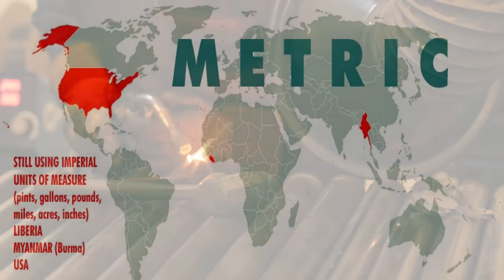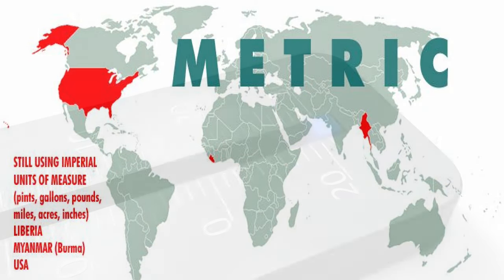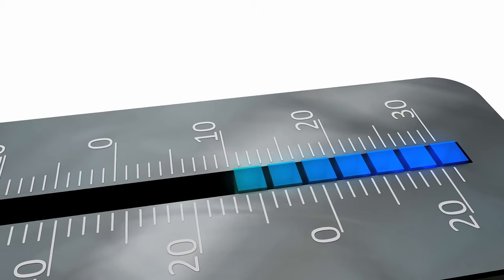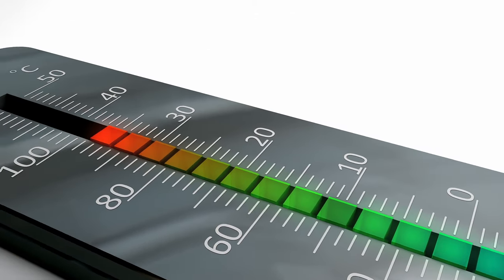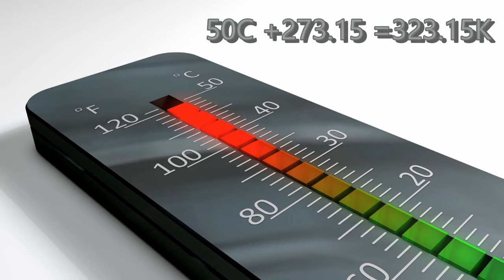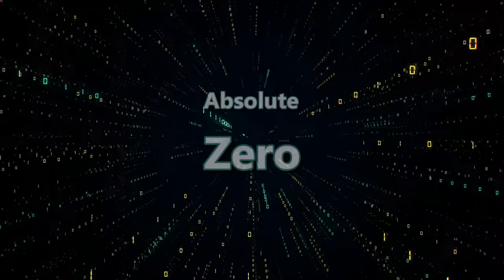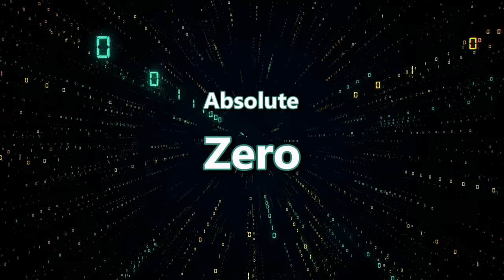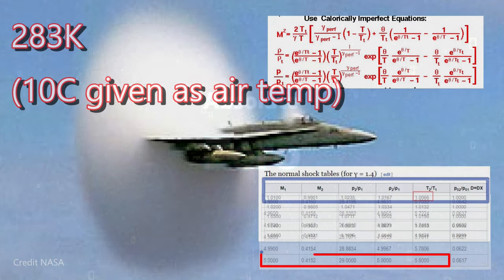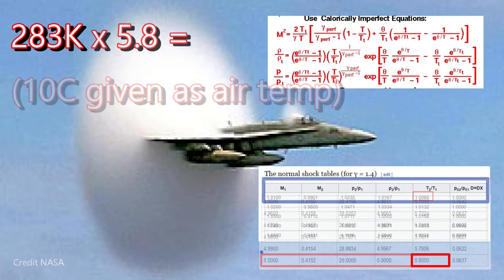Metric is used around the world, while Imperial is only used by a few countries. The metric scale for temperature is Celsius, but scientists should always use Kelvin. By just adding 273.15 degrees, we can come up with the Kelvin value, because only a true measure of a material's heat energy will give you the correct answer. If we finally meet alien scientists out in the universe, we will almost certainly not use the same temperature scale, but it is certain that we will all start at the same absolute zero. If I had used Kelvin, I would have multiplied 283 Kelvin by 5.8.